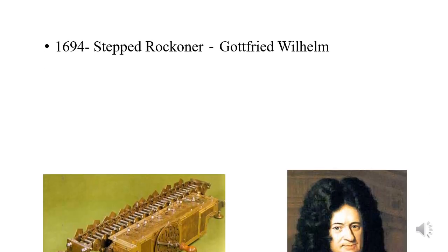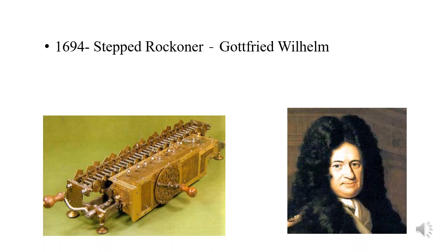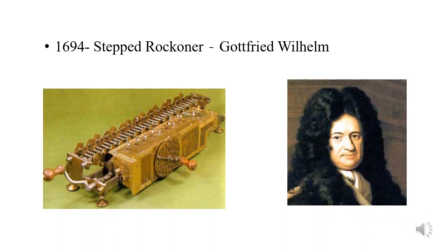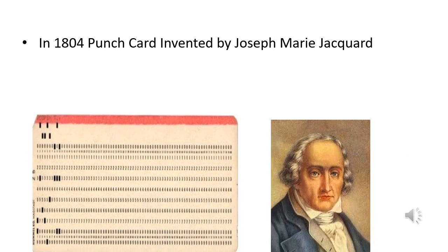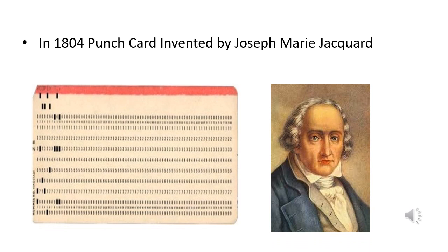In 1694, Gottfried Wilhelm, a German scientist, improved the Pascaline machine one more step so that it could multiply and divide, and called it the Stepped Reckoner. Although it is said that the concept of the punch card was used for the Stepped Reckoner machine, it is found in history that the first use of the punch card was found in the loom made by Joseph